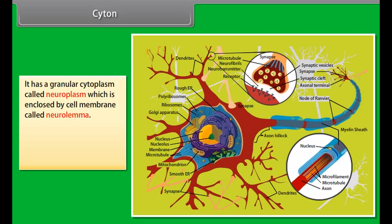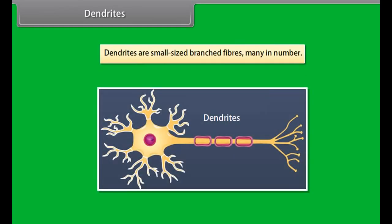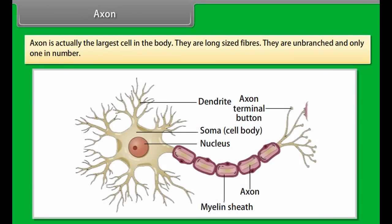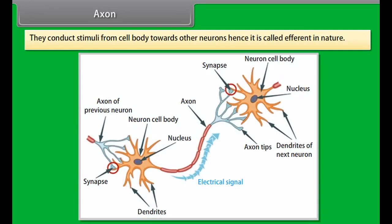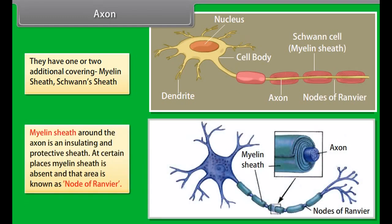The cytone is a typical animal cell-type structure which contains cytoplasm and a nucleus. It is spherical in shape, about 4 to 135 micrometers. It has a granular cytoplasm called neuroplasm, which is enclosed by a cell membrane called neurolemma. It also has a large spherical centric nucleus with a nucleolus. It has all cell organelles like mitochondria, E.R., Golgi bodies, lysosomes, ribosomes, etc., and also a number of small granules which help in protein synthesis.